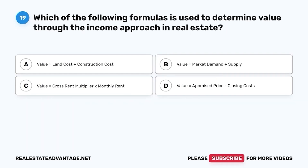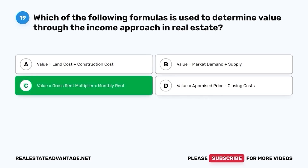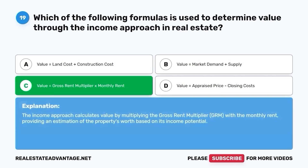Question 19. Which of the following formulas is used to determine value through the income approach? The correct answer is C. Value equals Gross Rent Multiplier times Monthly Rent. The income approach calculates value by multiplying the Gross Rent Multiplier (GRM) with the monthly rent, providing an estimation of the property's worth based on its income potential.